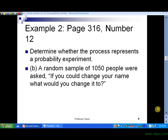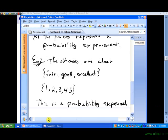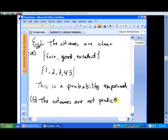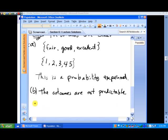Well, it looks here that in part B that the outcomes are not predictable. I mean, you could change your name to anything. And, you know, you can't write them all down in advance. That wouldn't be practical. That's called the sample space to write all the possible outcomes. And so, in this case, the process is not a probability experiment.